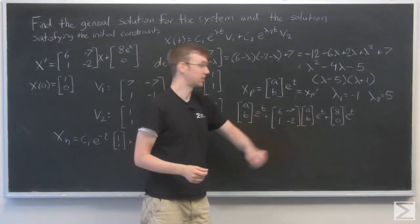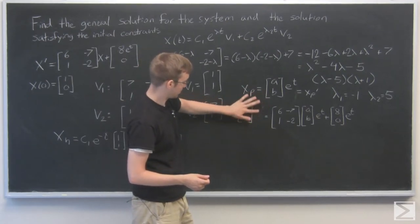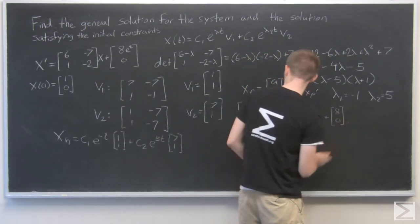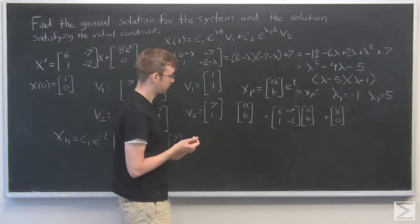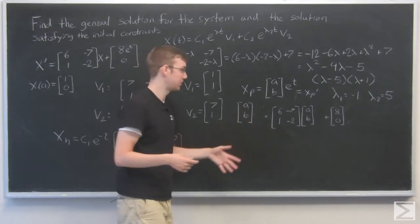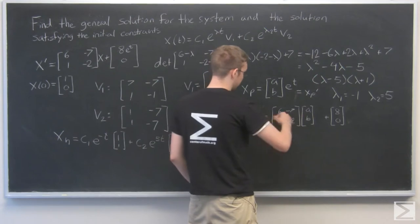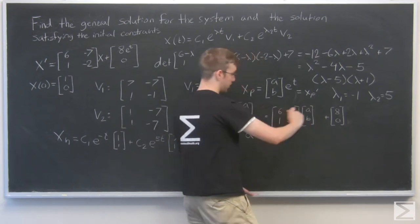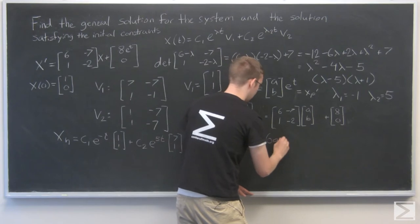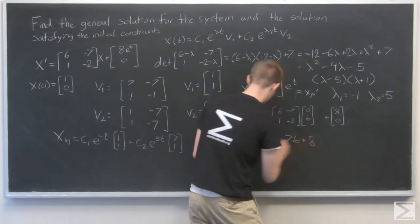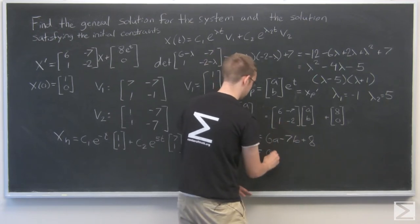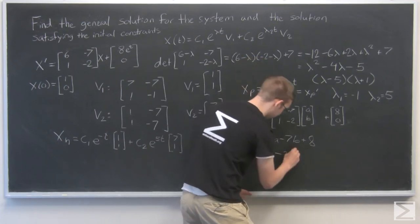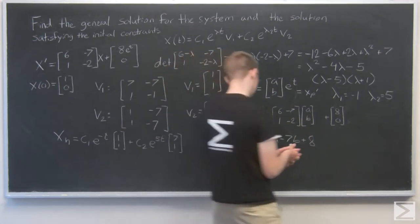Now I have e^t's on every part of that equation. I can factor that out or divide it out. For here, I'm briefly going to switch out of matrix form just because I think it's easier to see this way. What this multiplication goes out to is: a equals 6a - 7b + 8 and b is equal to a - 2b plus 0. I'm going to get a constant on one side and multiples of a and b on the other.